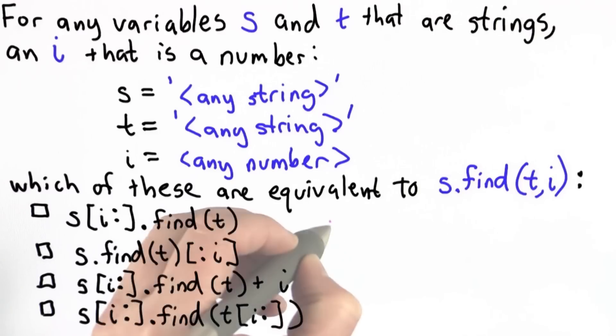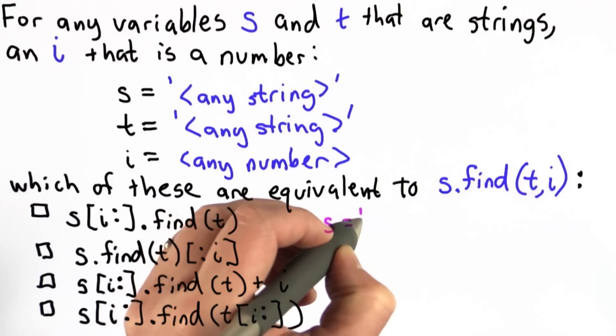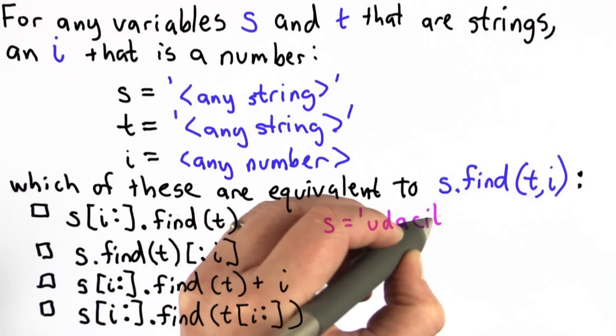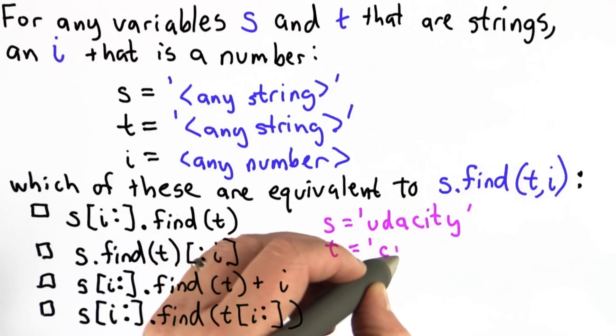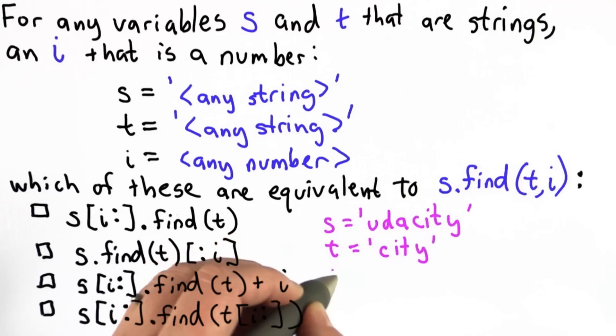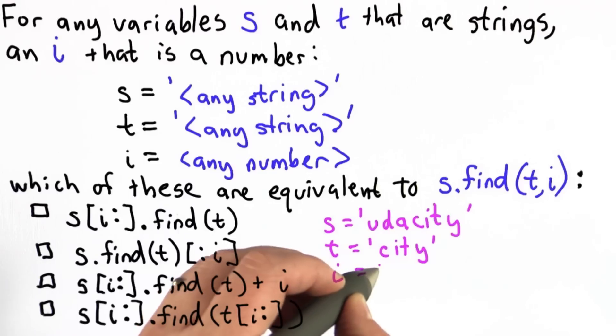And let's go through an example to understand why. So let's suppose we started with s is udacity. Let's make t city and make i 3.